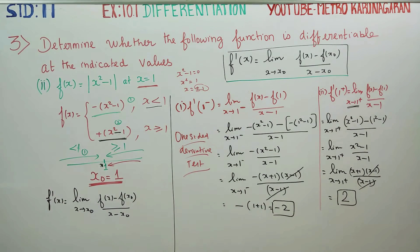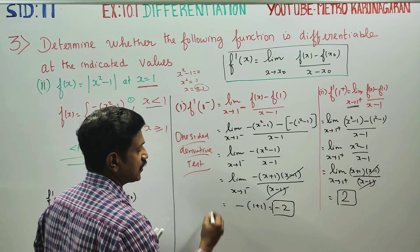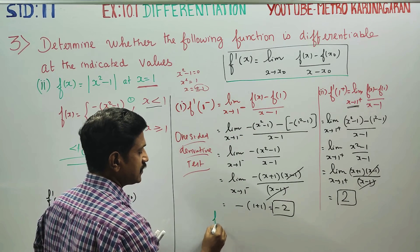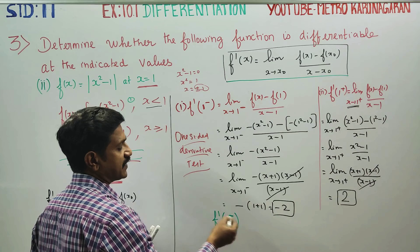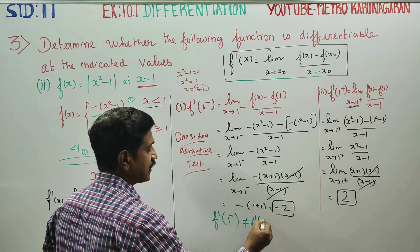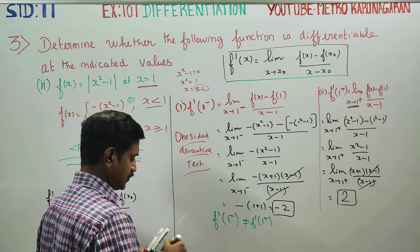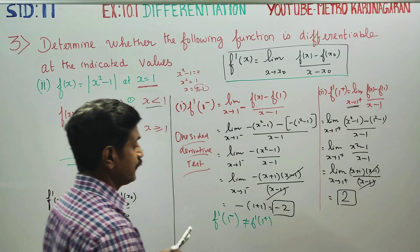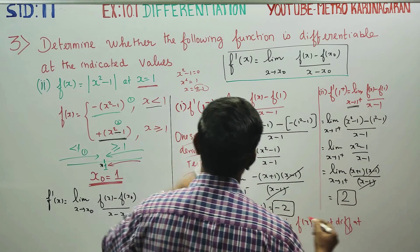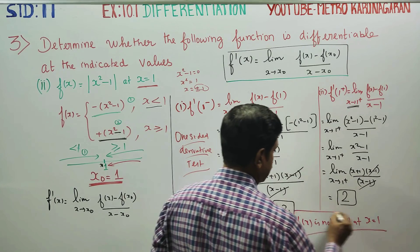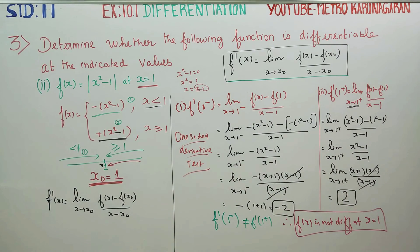The answer is 2 for both, but they differ — so we declare that the function is not differentiable at x is equal to 1. The left-hand derivative and right-hand derivative are not equal, meaning the curve slope and point slope do not match. Thank you.